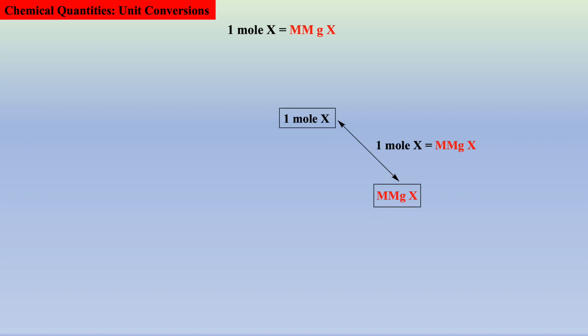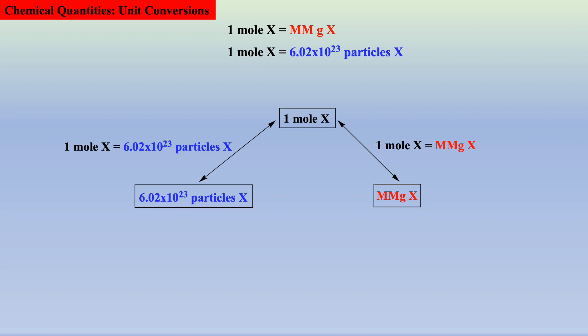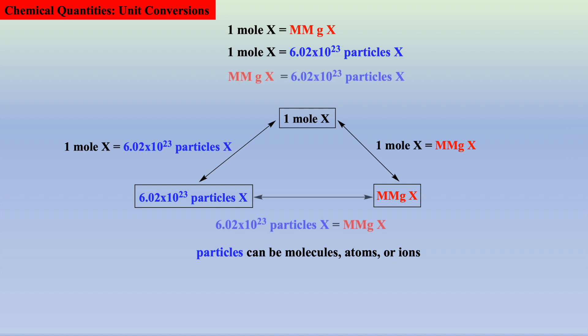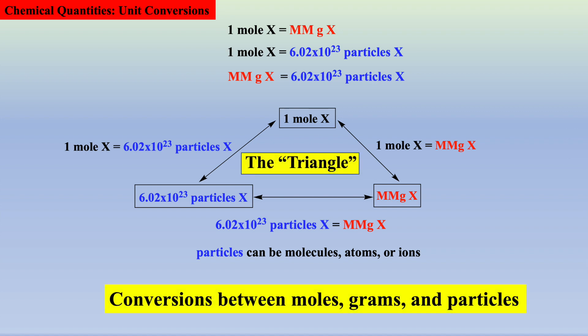In the previous exercises, one mole of whatever we are talking about is equal to its mass in grams, which can be calculated with the aid of the periodic table. In addition, one mole of whatever we are talking about is also equal to Avogadro's number of particles. Once x is defined, we can be more specific by using molecules, atoms, or ions instead of particles. Employing the transitive property, we can also equate number of particles and molar mass as shown, which now completes our triangle. Being able to zip around the triangle will be an imperative skill when we tackle even more challenging exercises in chemistry, such as stoichiometric exercises and limiting reactant exercises in the next video.